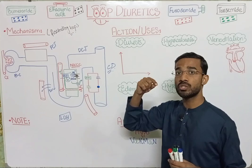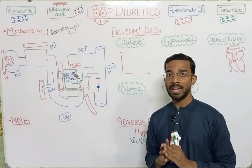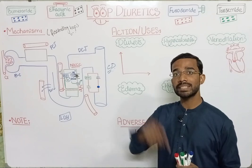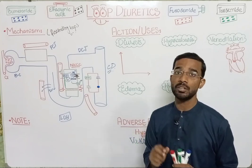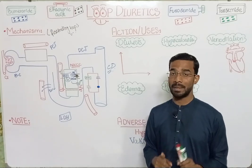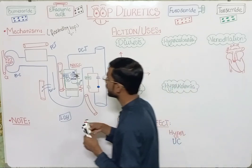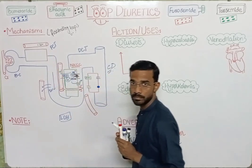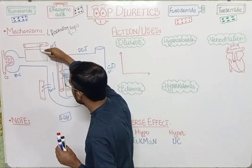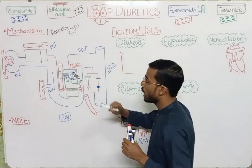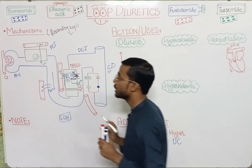Now, if we use loop diuretics, when we take loop diuretics they enter the blood. At the proximal convoluted tubule, there are two excretory systems: the acid excretory system and the base excretory system. Loop diuretics move from the blood into the tubule at the proximal convoluted tubule through this secretory system. The drug then moves down through the descending loop and ultimately reaches the ascending loop of Henle.